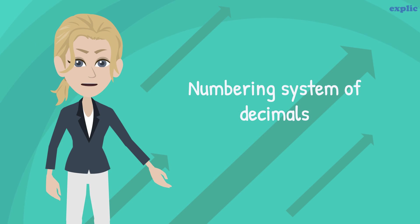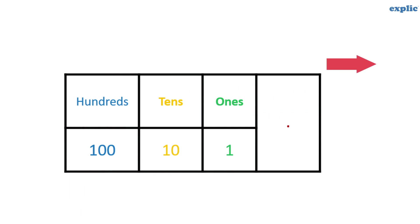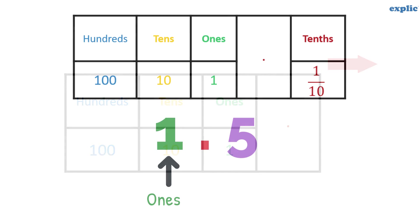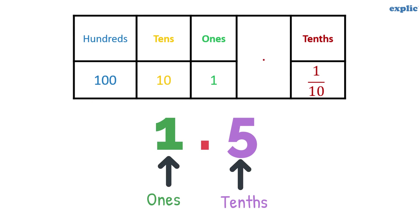Let's understand the numbering system of the decimals. Let's extend the place value chart beyond the decimal. The numbering system after the decimal starts with tenths. The first digit just after the decimal point indicates tenths place.